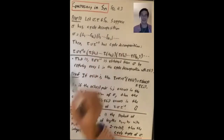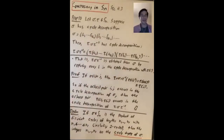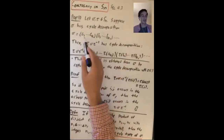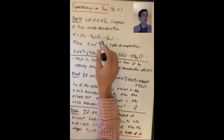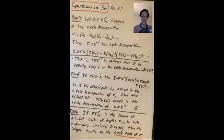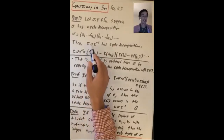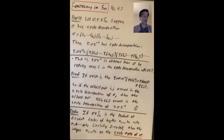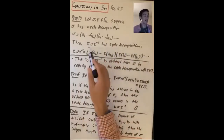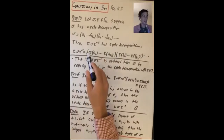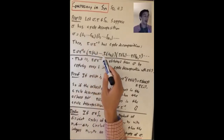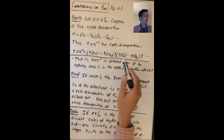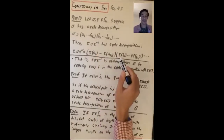Proposition 10 says: if you have two elements of Sₙ, σ and τ, suppose σ has cycle decomposition (a₁ a₂ … a_{k₁})(b₁ b₂ … b_{k₂})…, then the cycle decomposition of the conjugate τστ⁻¹ is (τ(a₁) τ(a₂) … τ(a_{k₁}))(τ(b₁) τ(b₂) …